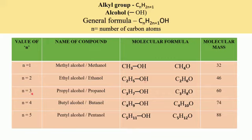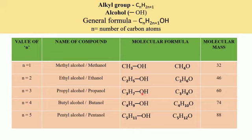If N equals 3, we get the formula C3H7OH. There are 3 carbon atoms, so it is a derivative of propane — the parent alkane is propane. It has one hydrogen less compared to propane, and that hydrogen has been substituted by the functional group OH. Since it is a derivative of propane, the IUPAC name is propanol, with E replaced by O-L. The common name is propyl alcohol.